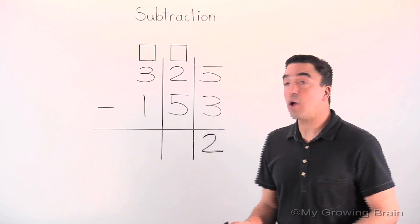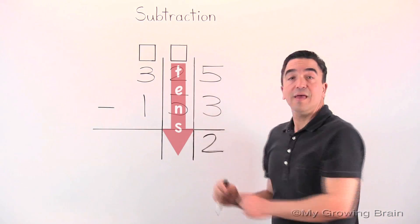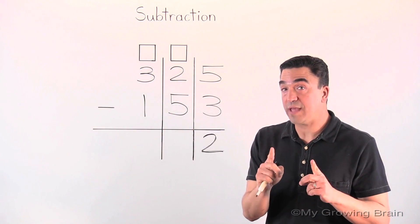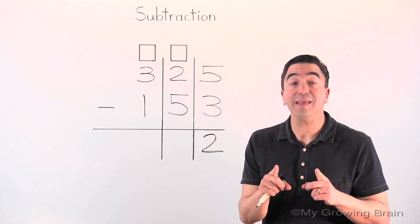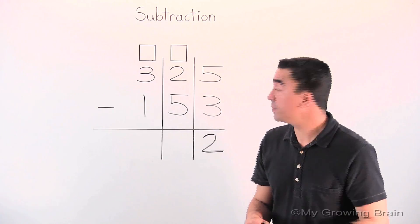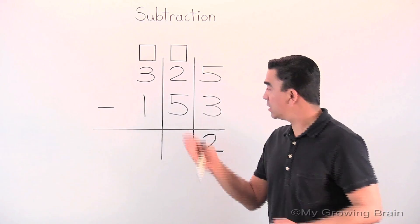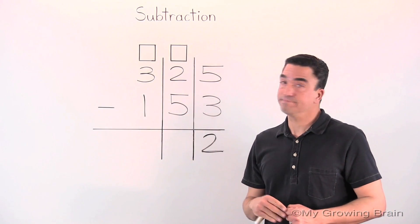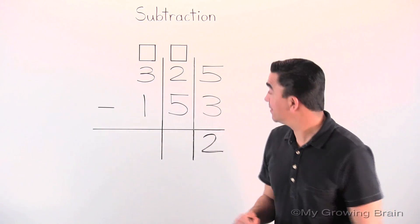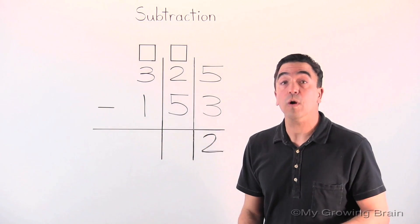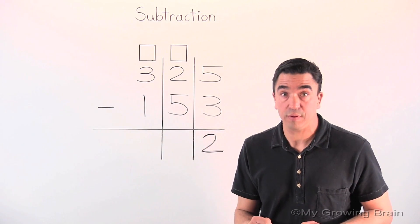Now, let's go into the tens place. Once again, let's see if we need to regroup. Is the top number greater than the bottom number? It's not. Two is smaller than five. Therefore, we do need to regroup.